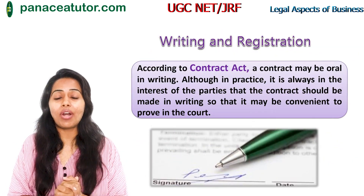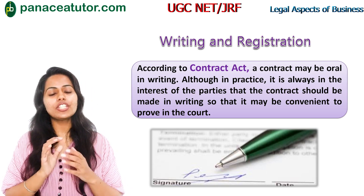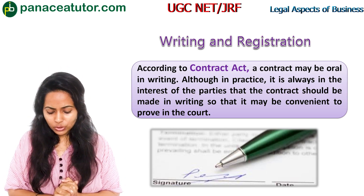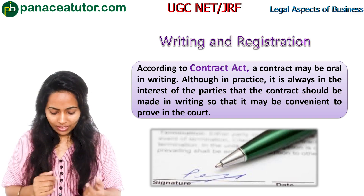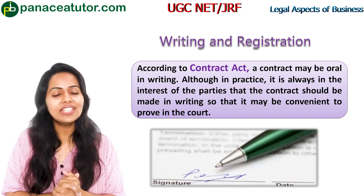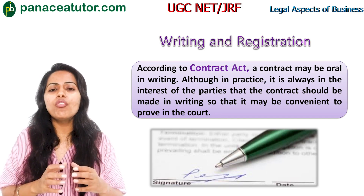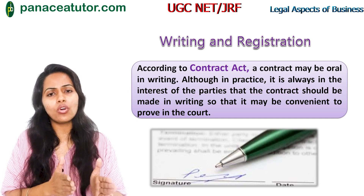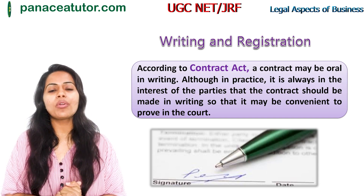The next essential element is writing and registration. A contract can be either oral or in writing. For example, if A verbally promises to sell his books to Y for Rs. 200, it is a valid contract because the law does not require it to be in writing. However, for immovable property, a written deed or registry is required. So whether the contract should be written or oral depends on the nature of the contract.